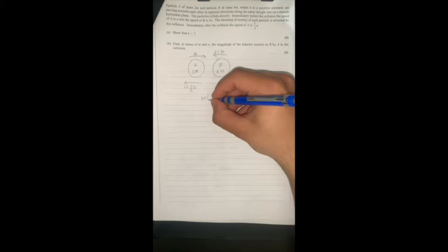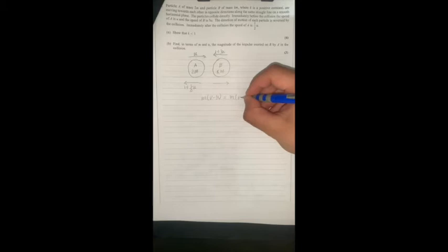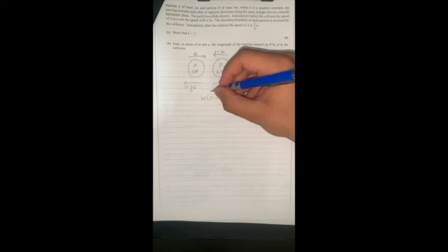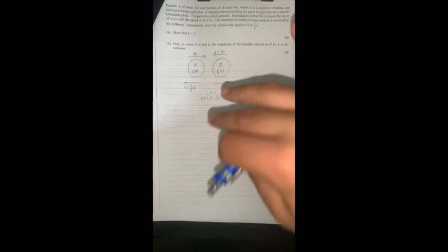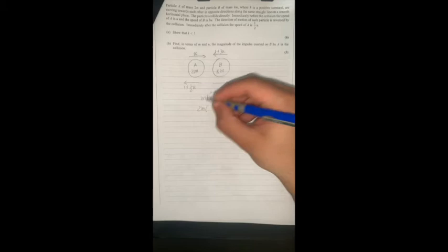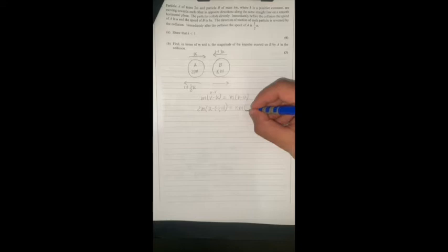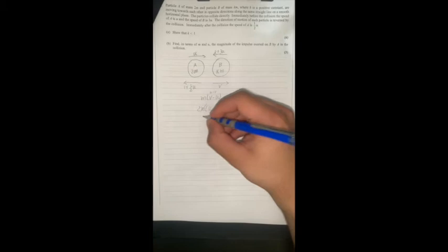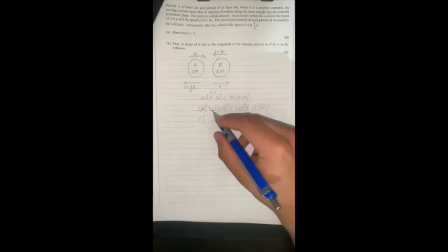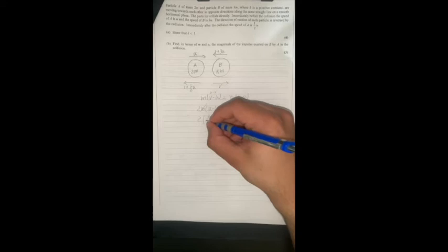Then I will go for the equation impulse equals impulse, so m(v - u) equals m(v - u). But for the particle on the left, we're going to write u minus v. So we write 2m times (u minus negative half u) equals km times (v minus negative 3u). I'm assuming the velocity of B after collision is v.